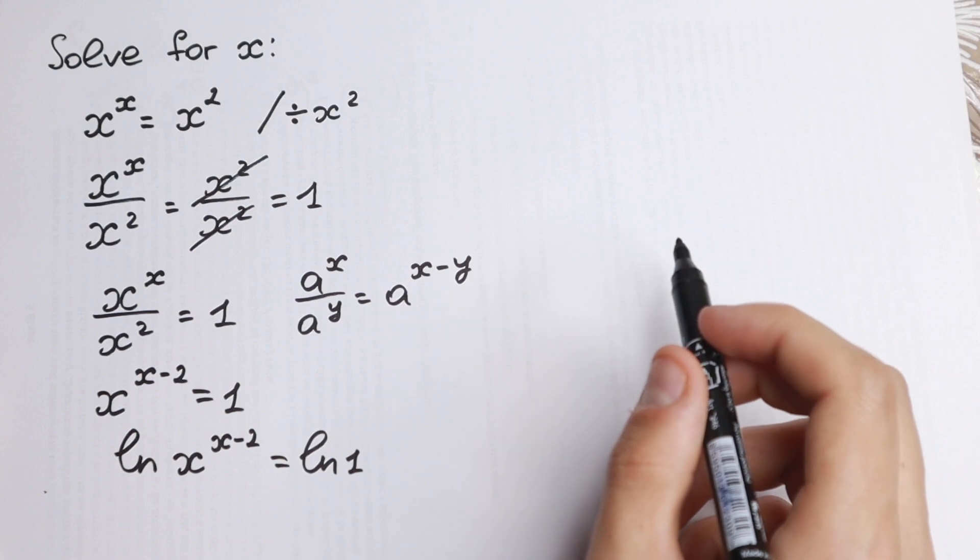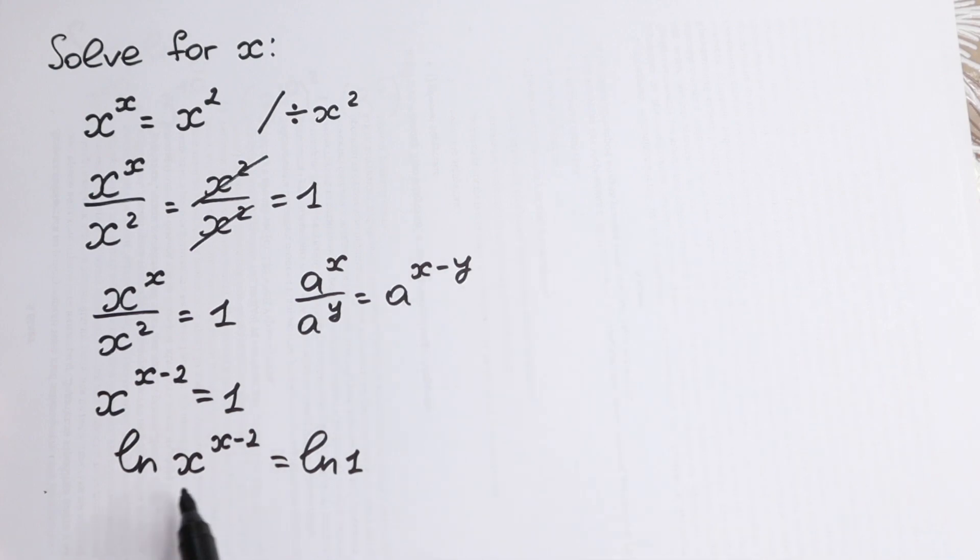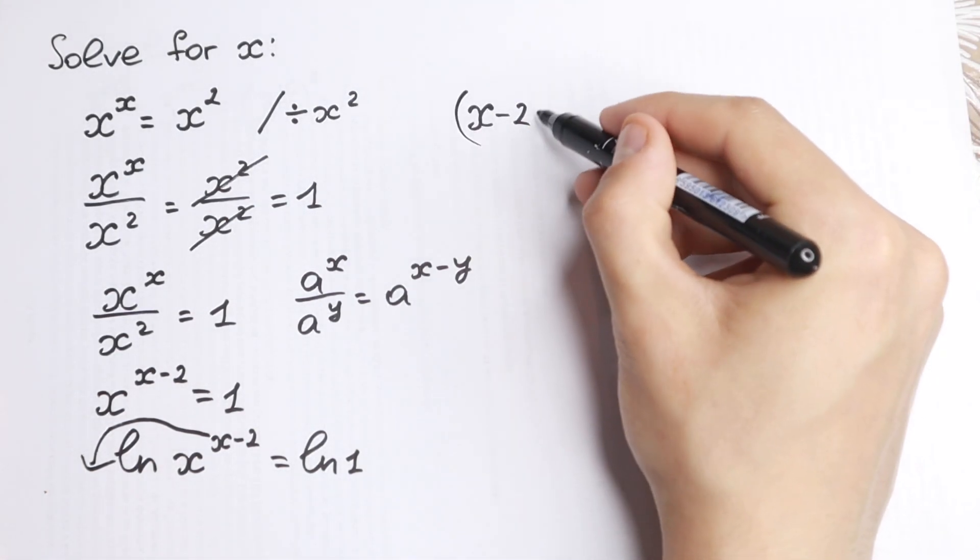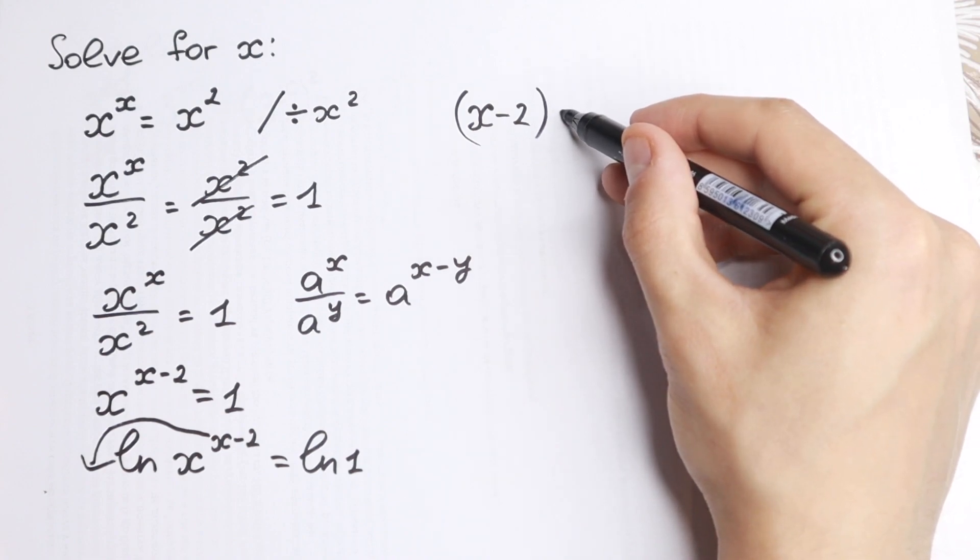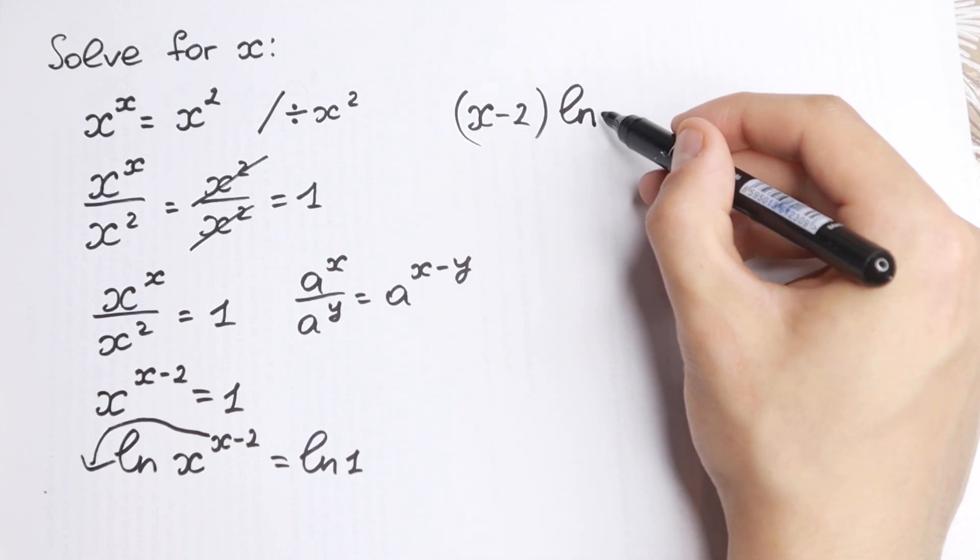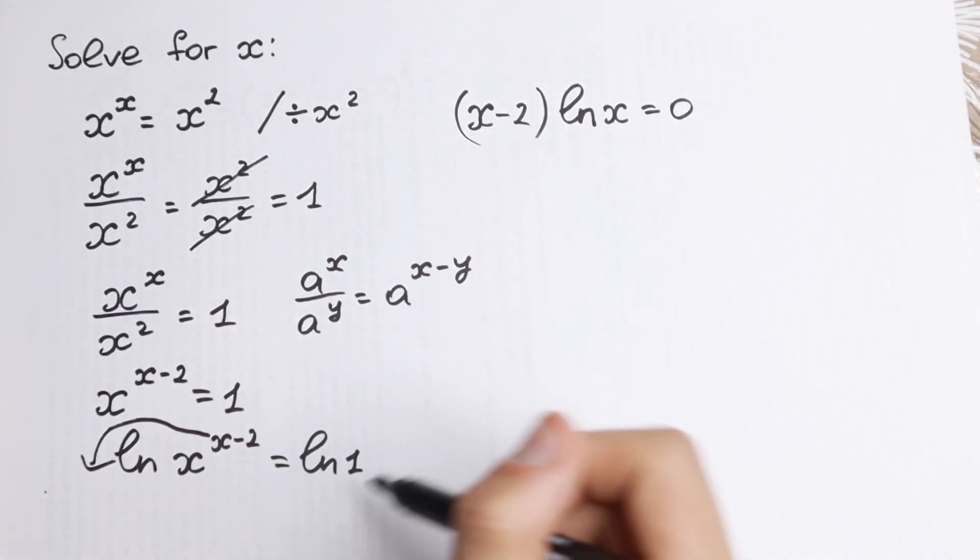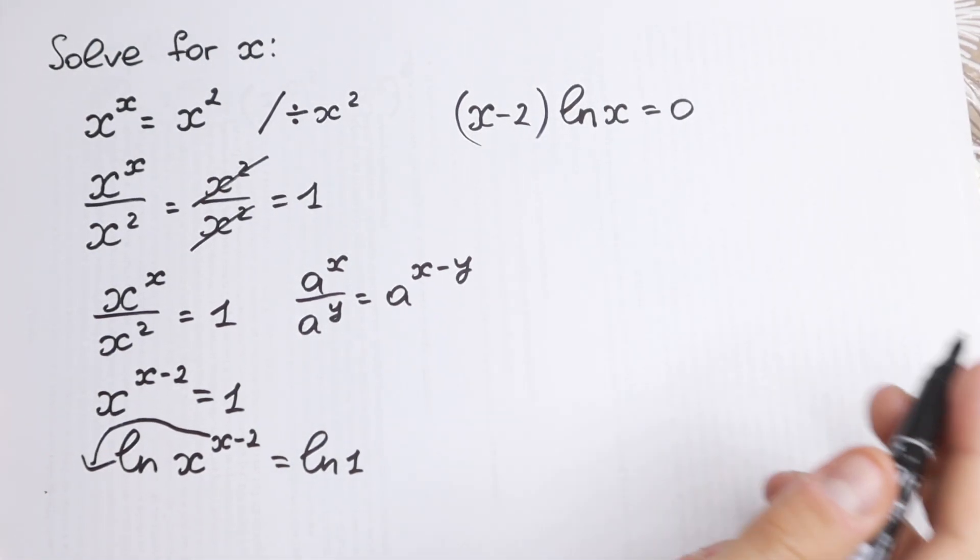Okay, what we're going to do next? Take a look closely. If we take a log from both sides, this power jumps to the beginning so we will have x minus 2 and we still have natural log x. Natural log x equal to 0 because natural log 1 equal to 0.